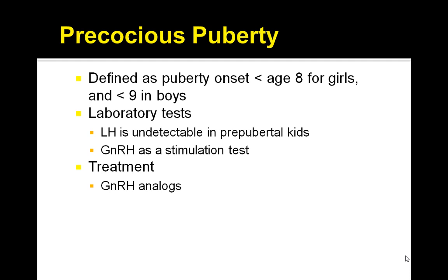There are subtypes you need to understand. Central precocious puberty results from early activation of the hypothalamic GnRH production, most commonly idiopathic, and it may be related to obesity. It can also be caused by CNS tumors. Peripheral precocious puberty is called pseudo precocious puberty, and it results in non-GnRH production. The key laboratory test you need is the GnRH test.